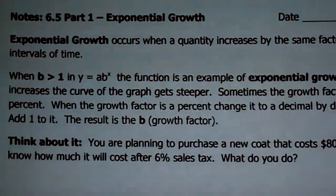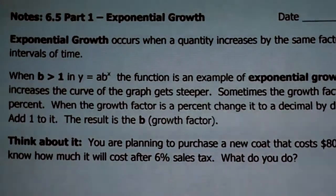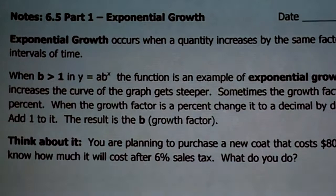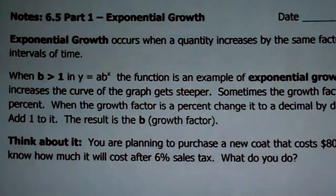The first part we're going to talk about is exponential growth, and then 6.5, part 2, we'll talk about compound interest. They do go together, but it seemed like too much for just one. Alright, so exponential growth.